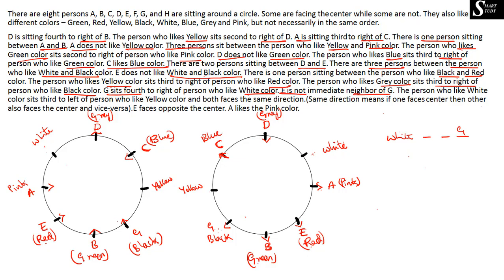Next: F is not an immediate neighbor of G, so F and G are not immediate neighbors. G is placed — F cannot be at the adjacent seats. Eliminating all positions occupied or neighboring G, only one place remains for F in each arrangement. Similarly, all persons A, B, C, D, E, F, G have been placed, so H must be substituted at the remaining position in both arrangements.